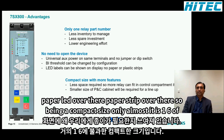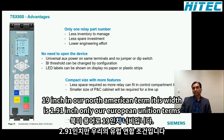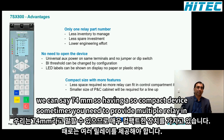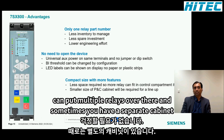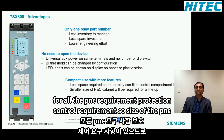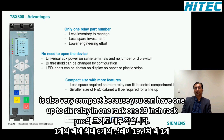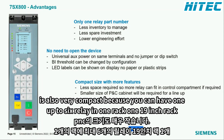Being compact — only about one-sixth of 19 inches, or 74mm wide (2.91 inches in North American terms) — allows multiple relays to fit in a medium voltage switchgear control chamber. For a separate protection and control cabinet, the compact size means you can fit up to six relays in a single 19-inch rack.